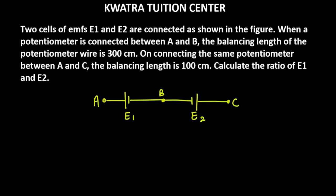Hello everyone, let's start with a new question from current and electricity. It says two cells of emfs E1 and E2 are connected as shown in the figure. When a potentiometer is connected between A and B, the balancing length of the potentiometer wire is 300 cm.